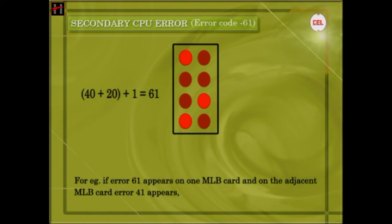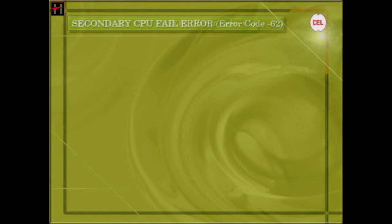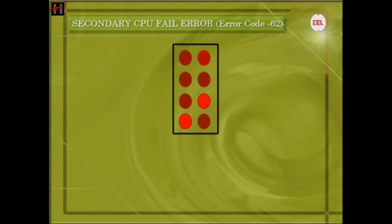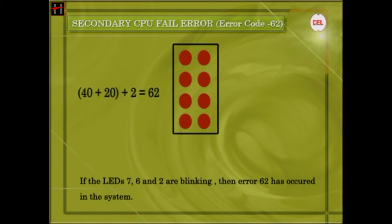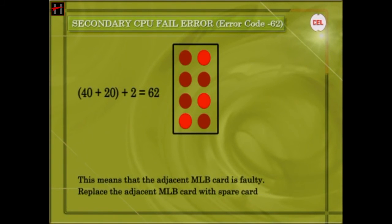For example, if Error 61 appears on one MLB card and on the adjacent MLB card Error 41 appears, then carry out the checks for Error 41. Secondary CPU Fail Error: If LEDs 7, 6, and 2 are blinking, then Error 62 has occurred. This error is generated if any of the CPUs fails to respond with its adjacent CPU due to failure of any components. This means that the adjacent MLB card is faulty — replace the adjacent MLB card with a spare card.